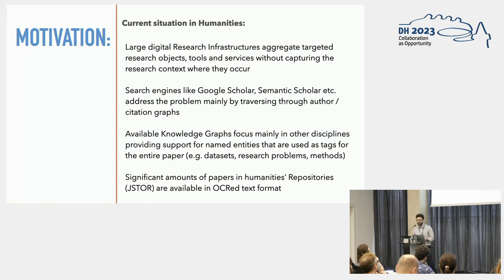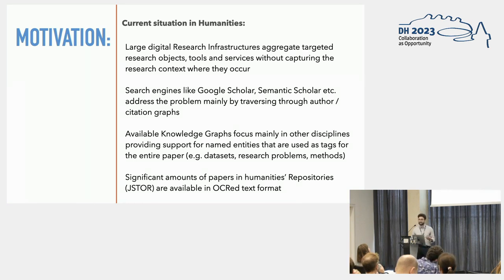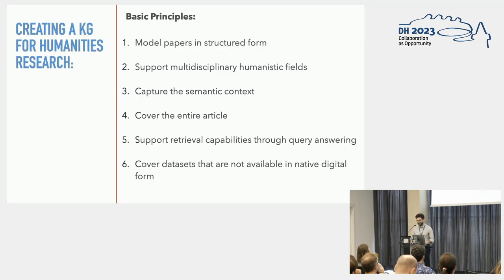For example, they associate the extracted methods, research problems, or datasets with the papers. And let's not forget about the significant amount of papers in humanities repositories like JSTOR that are not available in native digital form — usually at best as scanned PDF files, or even worse in poor OCR text format. I'm going to come back to that in a few slides.